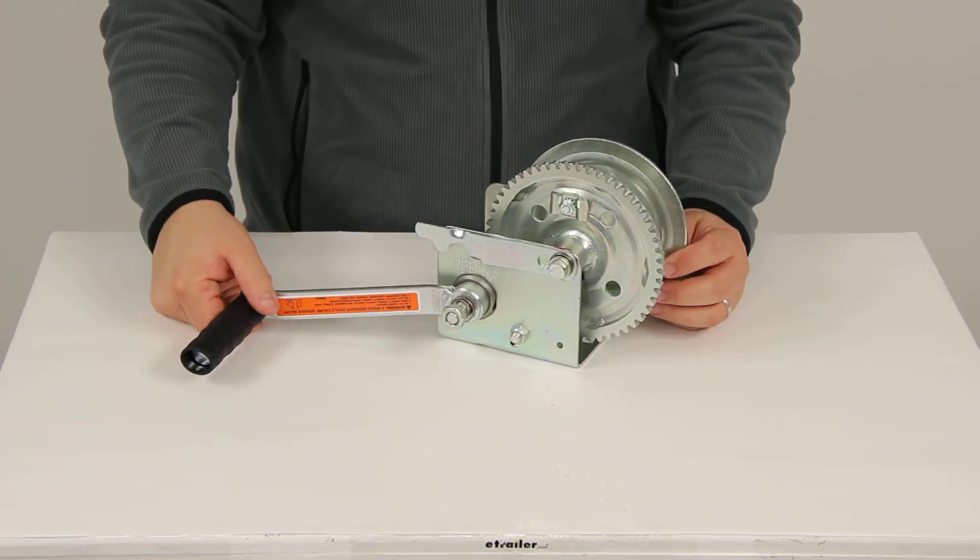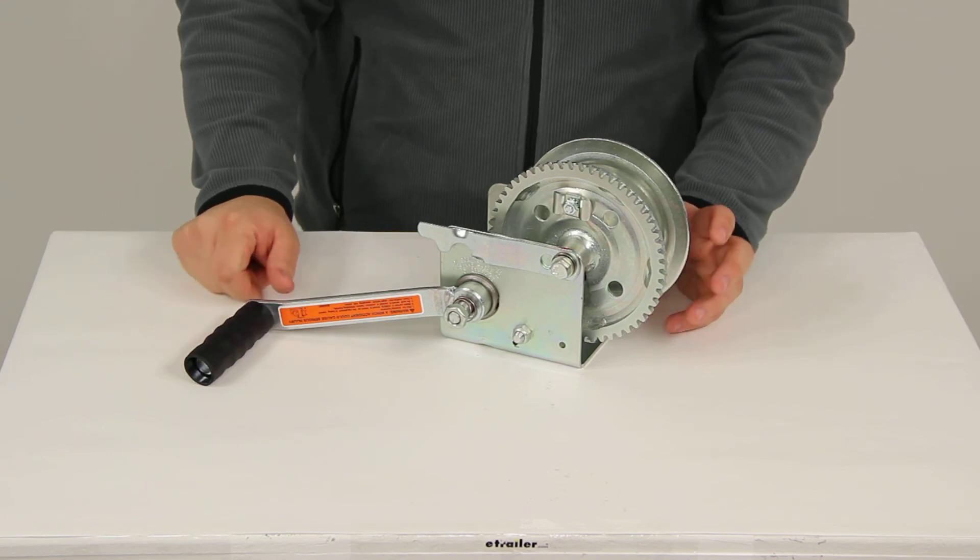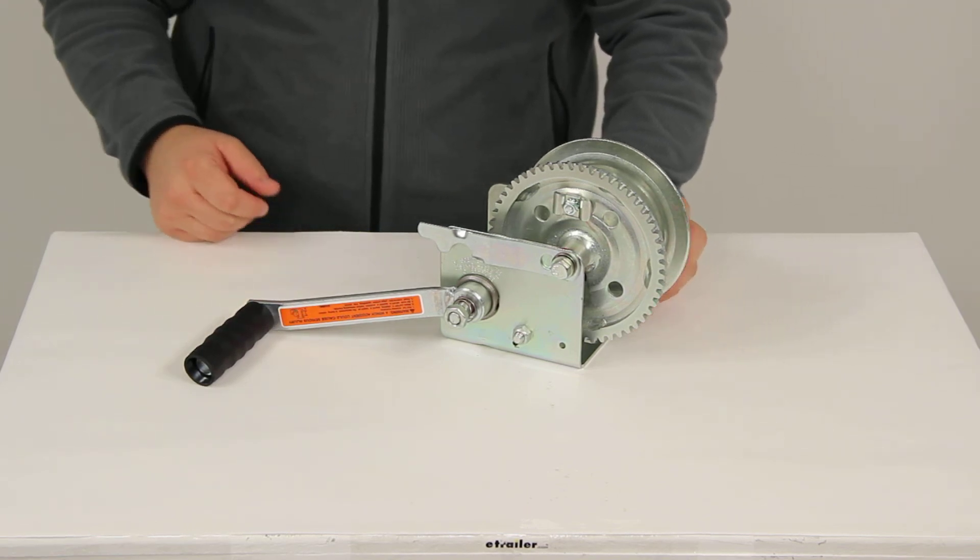That's going to do it for today's review of part number DL14993. This is the Dutton-Lanson freewheeling brake winch.